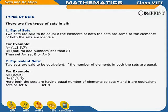Equivalent sets: two sets are said to be equivalent if the number of elements in both sets are equal. For example, A = {X, Y, Z} and B = {1, 2, 3}. Here both sets have an equal number of elements, so sets A and B are equivalent.